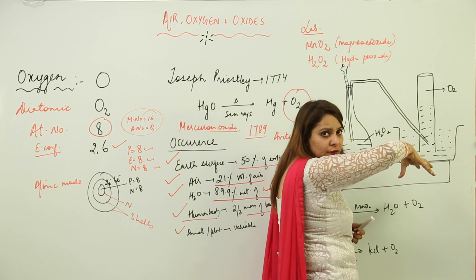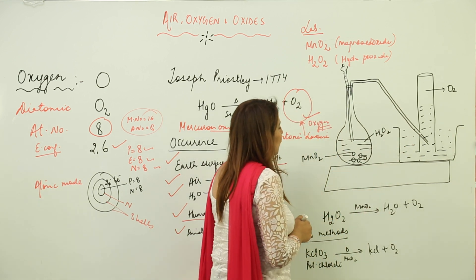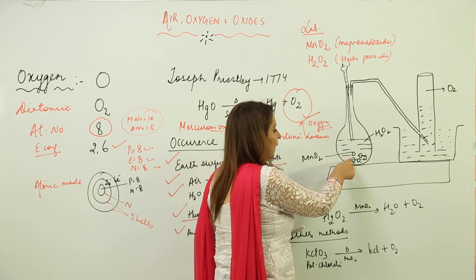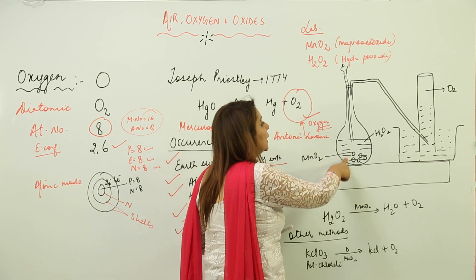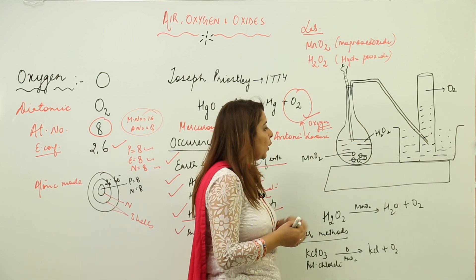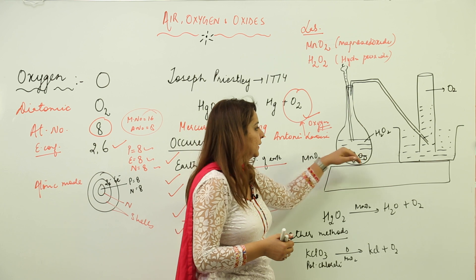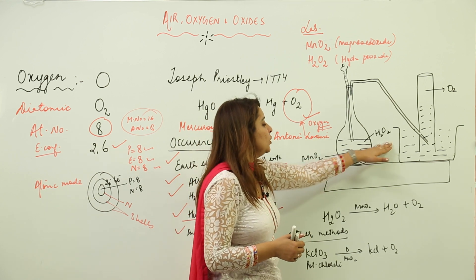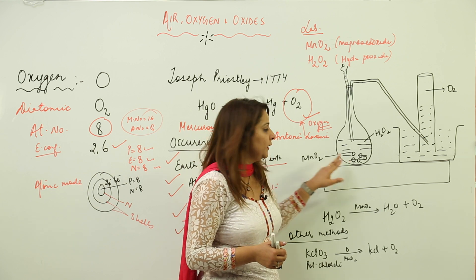Now what we do is we take MnO2 crystals—we take manganese dioxide in the round-bottom flask—and with the help of this dropper, we are pouring H2O2, that is hydrogen peroxide, drop-wise into this round-bottom flask. Then what happens? This H2O2 gets decomposed in the presence of MnO2.